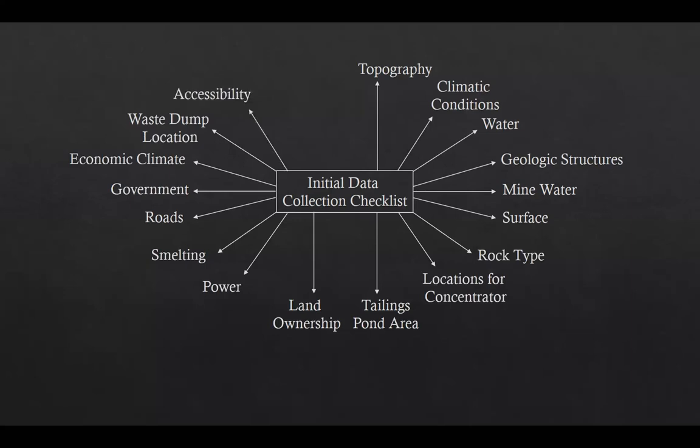Another item is accessibility of the principal area to the outside, including methods and reliability of transportation available as well as communication means. The last item in this checklist is listing down all methods used for obtaining all the relevant information — for example, maps, surveys, sampling techniques and personal inquiries.